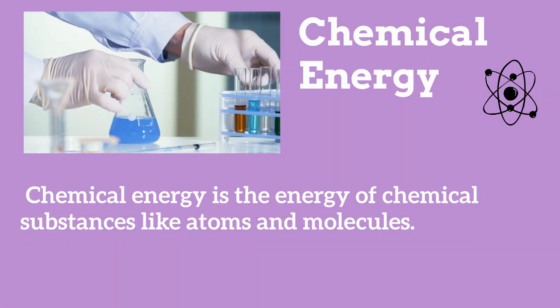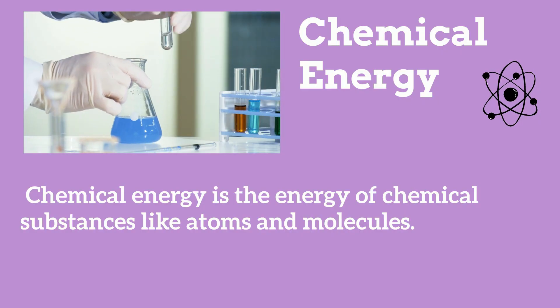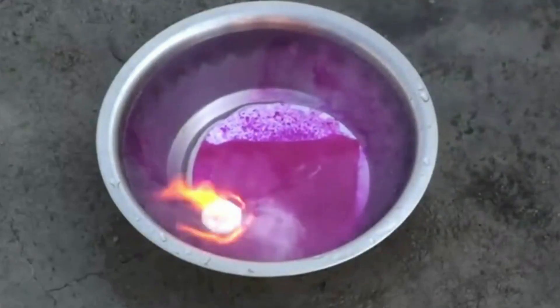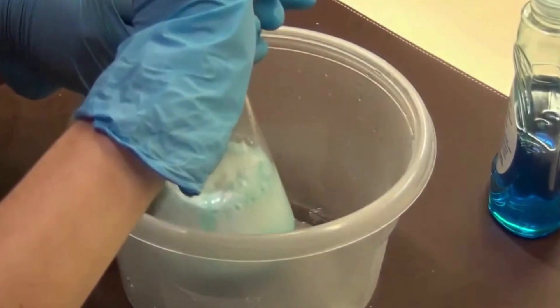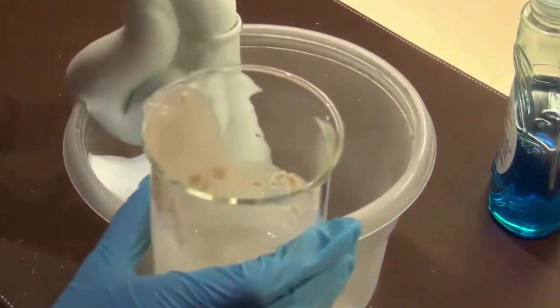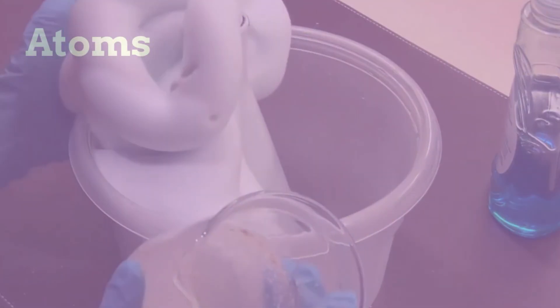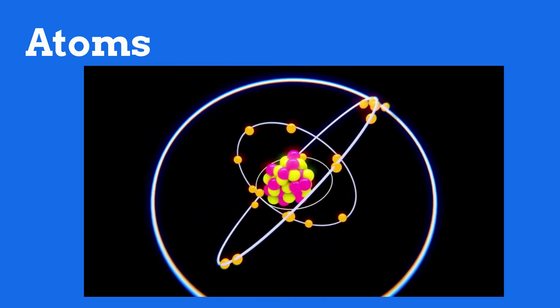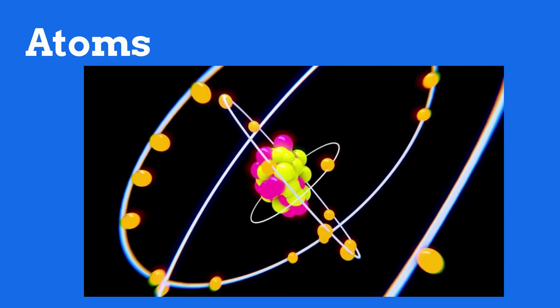Chemical energy is the energy of chemical substances like atoms and molecules that is released when these items undergo a chemical reaction and are transformed into other new substances. Atoms are central to chemical energy because it is stored in the bonds that hold atoms together.